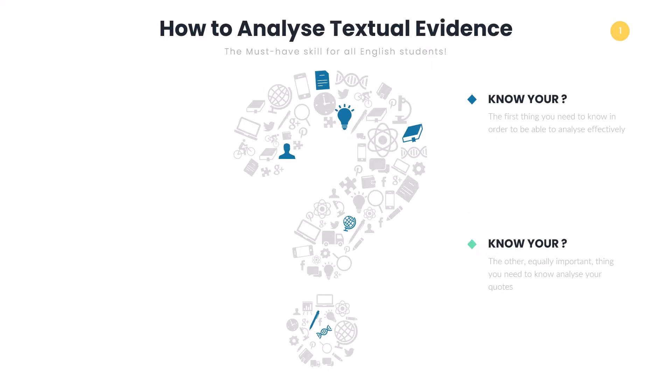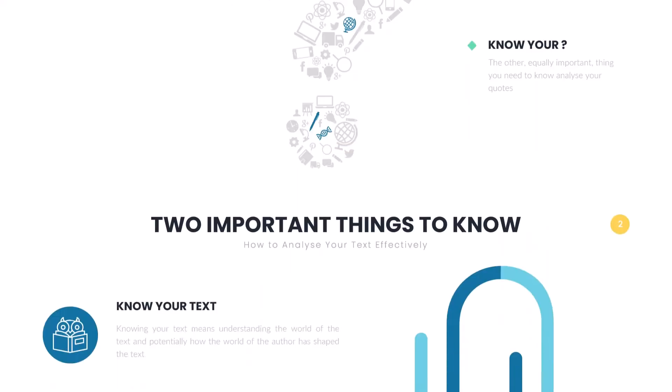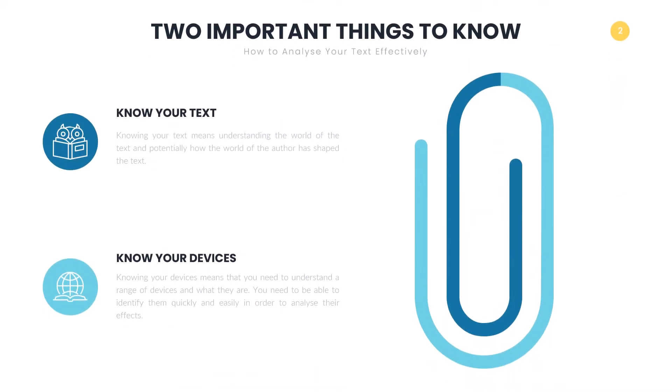The two things you need to know are: one, knowing your text, and two, knowing your devices. Without this knowledge, not only will analysis prove difficult, but you will never take your writing to the next level, which is the ultimate goal.